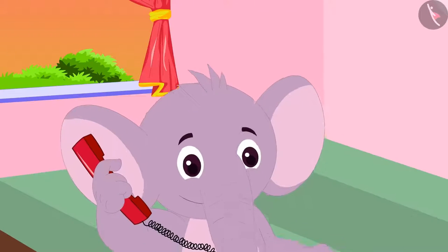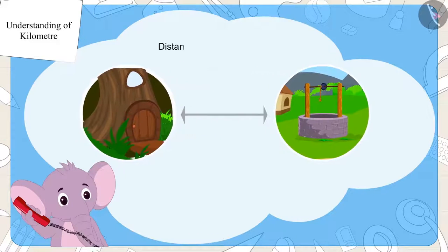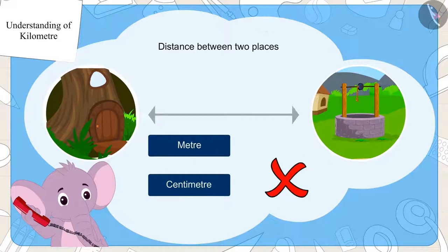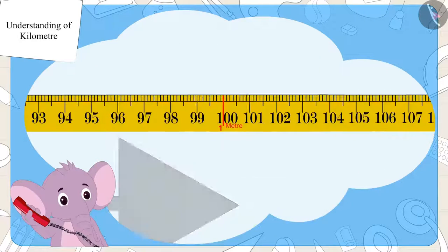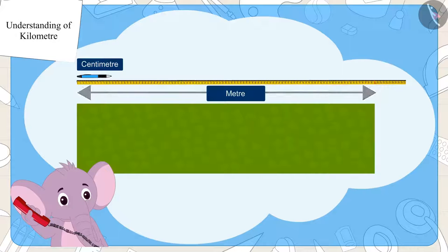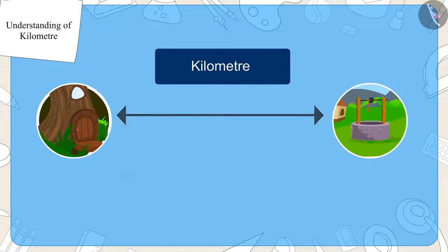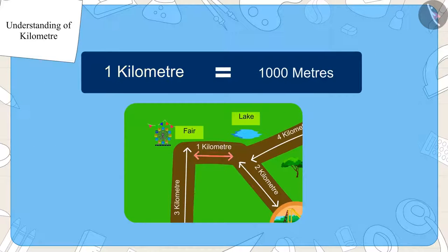Appu explained it to Chanda. He said, since the distance between two places is a lot, we cannot measure them in centimeters or meters. Centimeters and meters are units of measuring length. Similarly, kilometer is the unit used to measure the distance between two places. One kilometer is equal to one thousand meters.